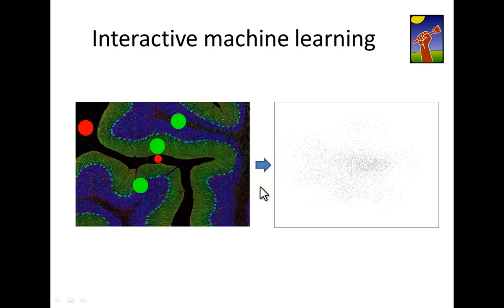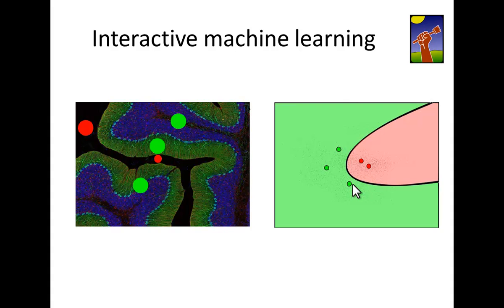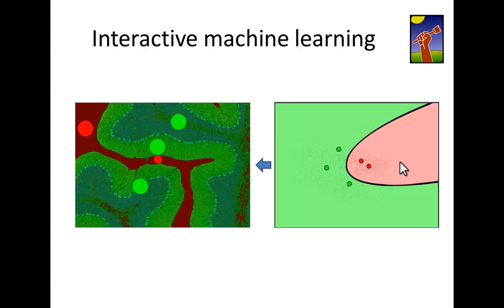Now the user can provide annotations in the image domain, which are of course transferred to the feature space, and can be used to train a classifier. Once the classifier has been trained, predictions can be made for each and every point in feature space — that means for each and every pixel in the image domain.